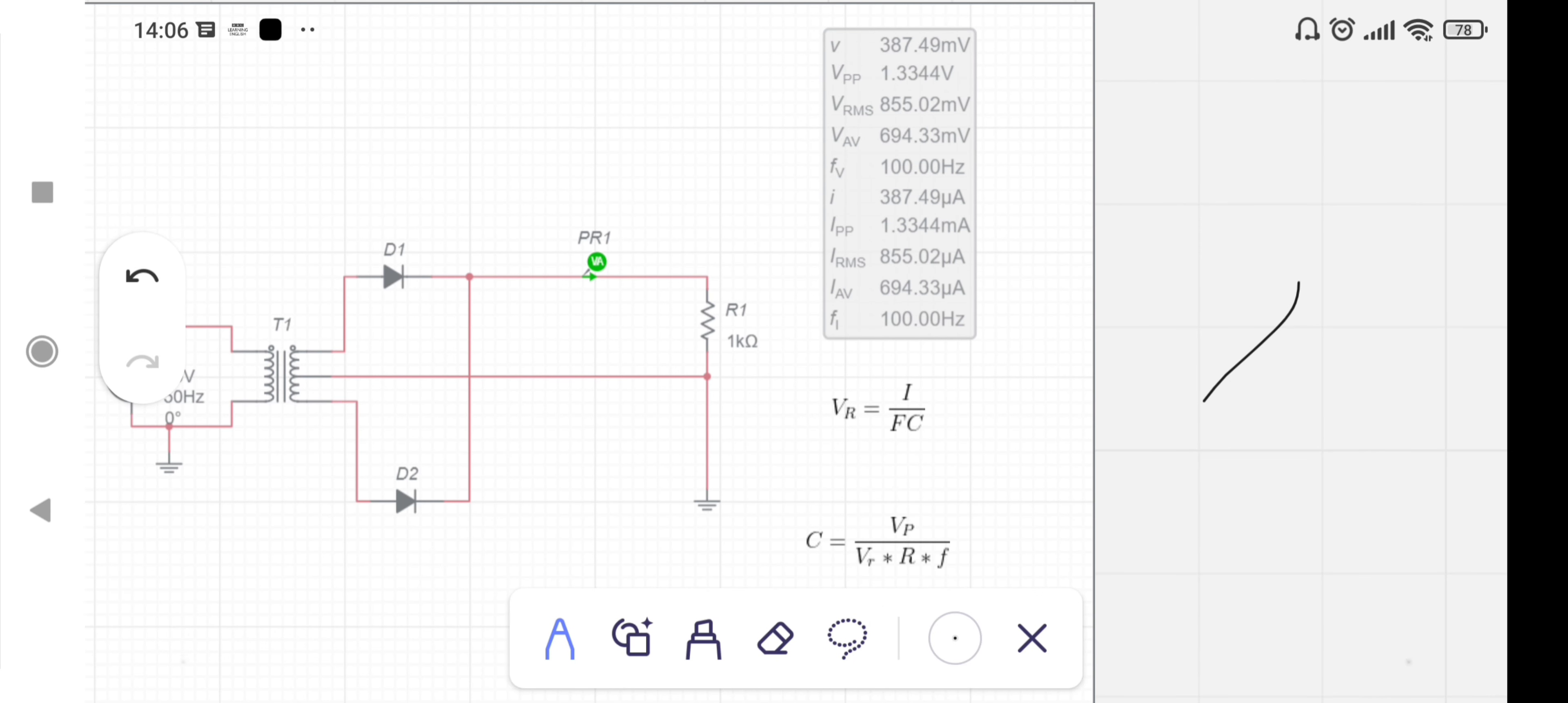VR is the ripple voltage, I is the current through the load, F is the frequency, and C is the capacitance value. Another formula: C = VP / (VR × 2 × R × F).